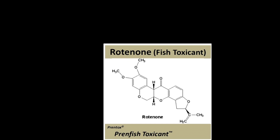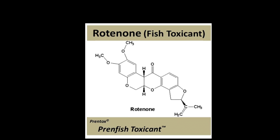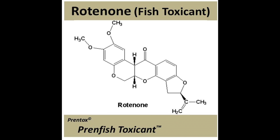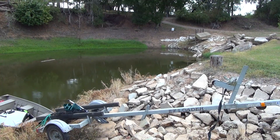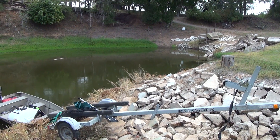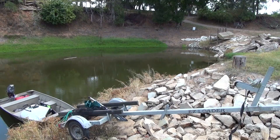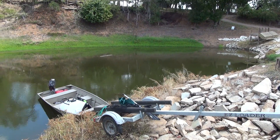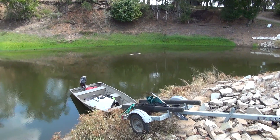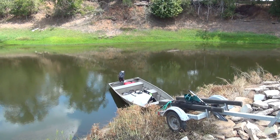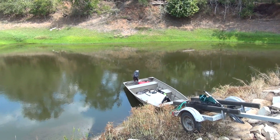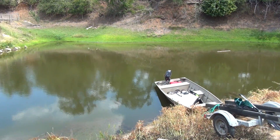Rotenone is a chemical agent derived from the roots and stems of tropical plants that has been used to intentionally kill fish populations in ponds for thousands of years. The primary reason to kill a pond is to remove any undesirable fish species. Undesirable fish can consist of fish that prey on the cultured species, overpopulate the pond, and end up competing with the cultured species for food and spawning habitat.